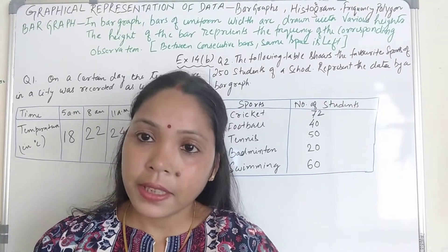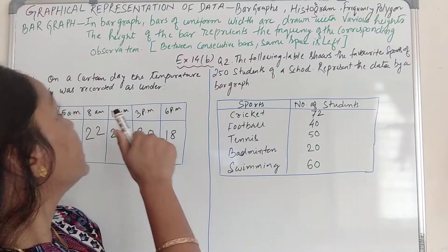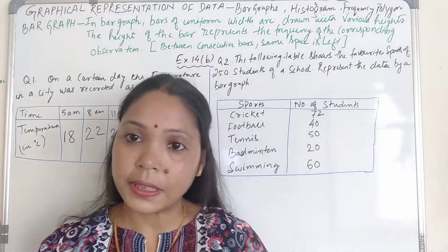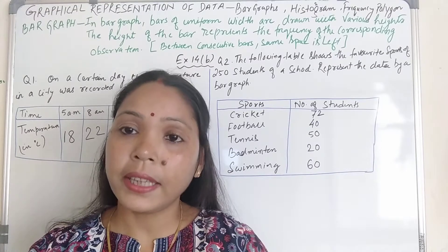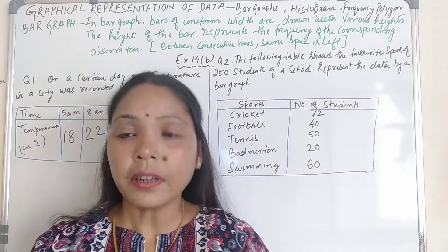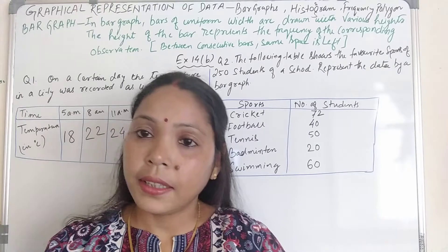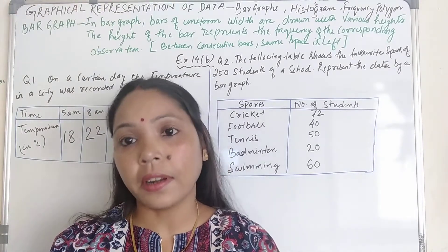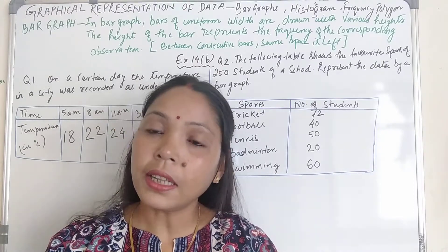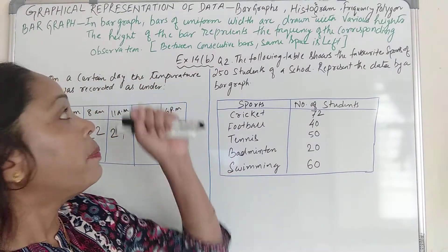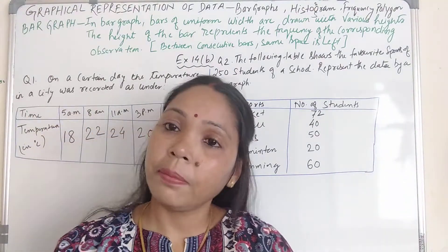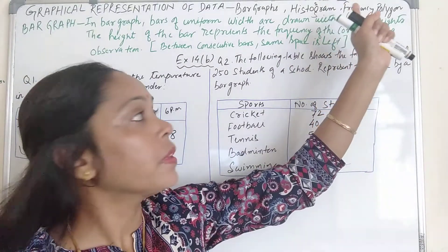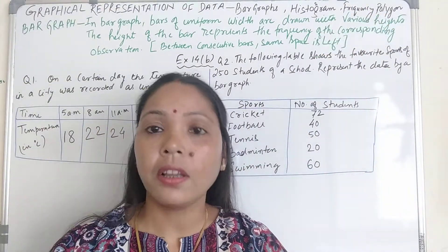Hello students. In this class we are going to discuss graphical representation of data. Till now we discussed how to arrange the data in tabular form. In this class we are going to discuss how we can use graphs to represent the data. To represent the data we have three methods: number 1, bar graphs; number 2, histogram; and number 3, frequency polygon.